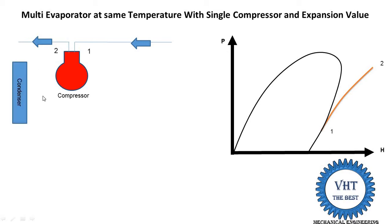This high pressure vapor refrigerant is supplied into the condenser. The condenser is a heat exchanger in which heat is rejected using a fan. Process 2 to 3 is isobaric heat rejection — isobaric means constant pressure. The temperature also remains constant but the phase changes: at the inlet of the condenser it is vapor phase, and at the outlet it is liquid phase.